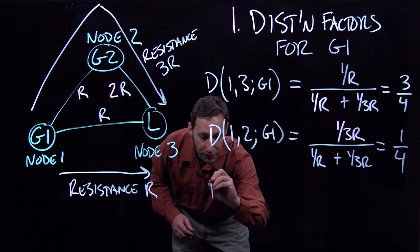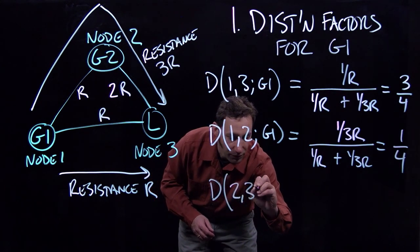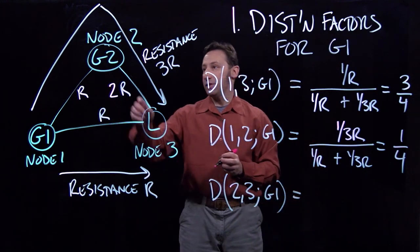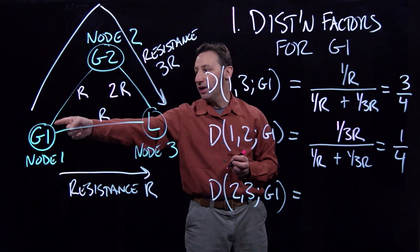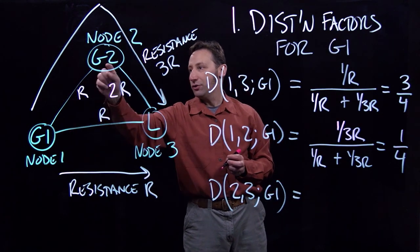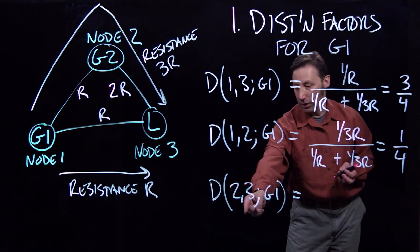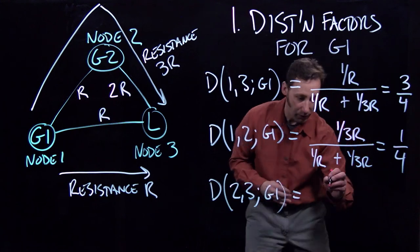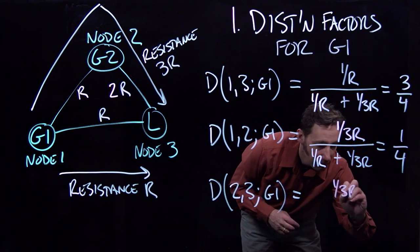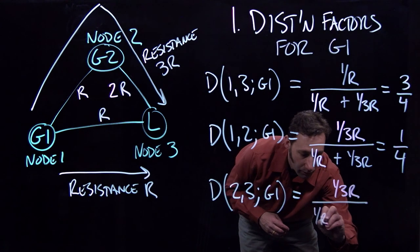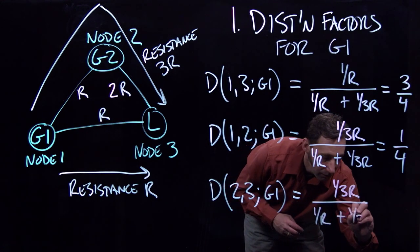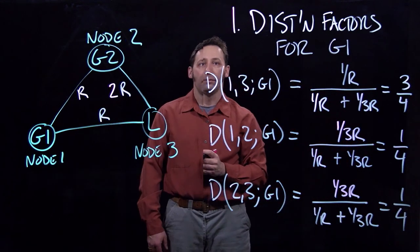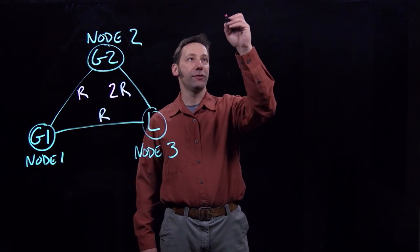Last, we're going to do the distribution factor of line 2 to 3 for G1. Because line 2 to 3 is on that same indirect path as line 1 to 2, we're going to have the same distribution factor on line 2-3 for G1 as on line 1-2 for G1. So we have 1 over 3R divided by 1 over R plus 1 over 3R, and we get 1 quarter.